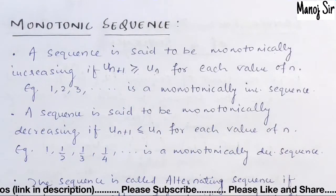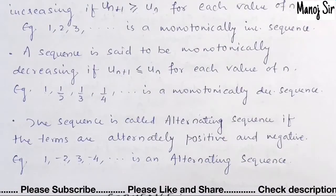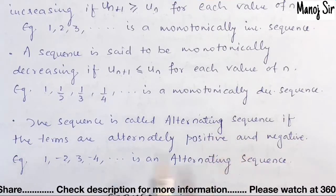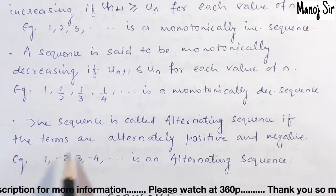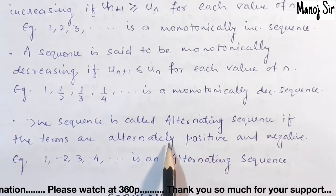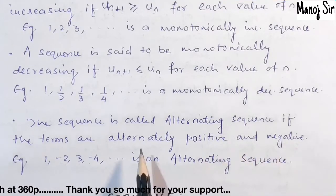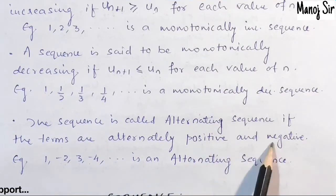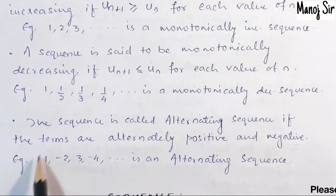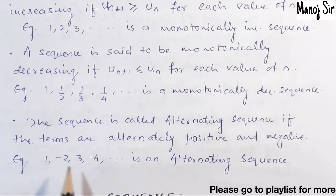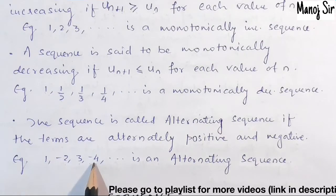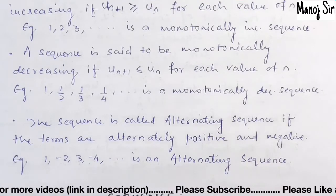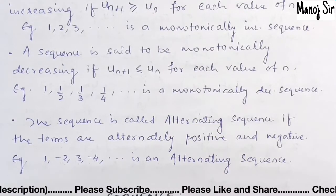We have a third type called an alternating sequence. A sequence is called an alternating sequence if the terms are alternately positive and negative. For example: 1, -2, 3, -4 — positive, negative, positive, negative — this is an example of an alternating sequence.